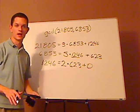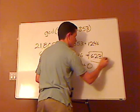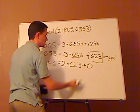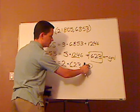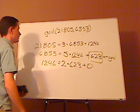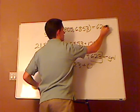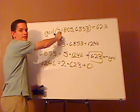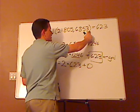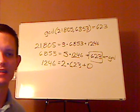So what that means is that this number right here, the 623, that's your GCD. Because it's whatever the remainder is before 0. It's always the previous one before 0. So the GCD of 21,805 and 6,853 is 623, and that's it.